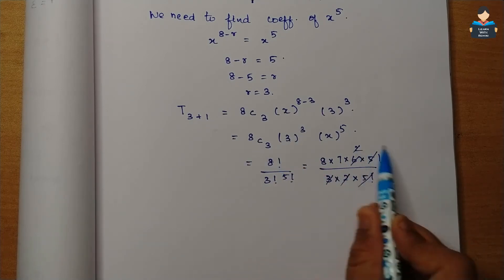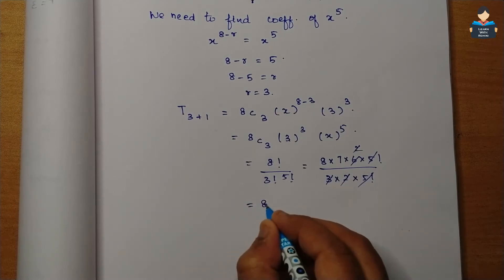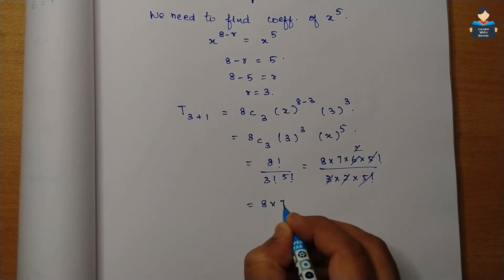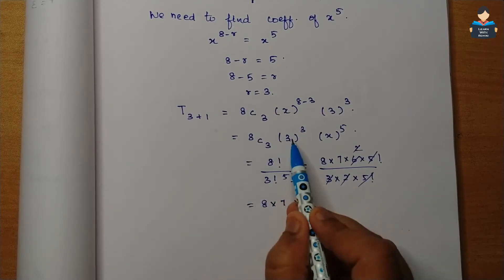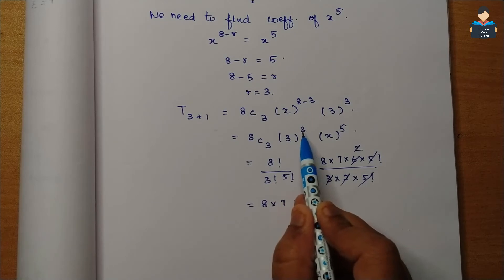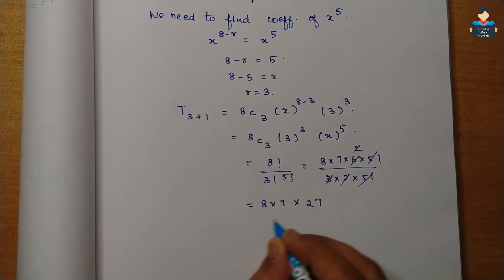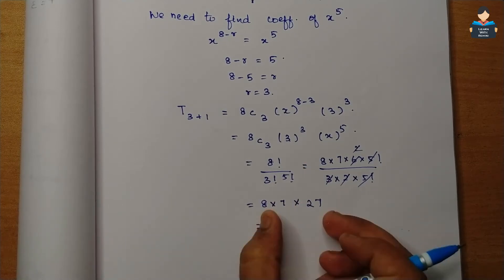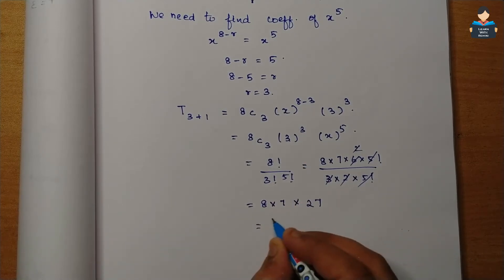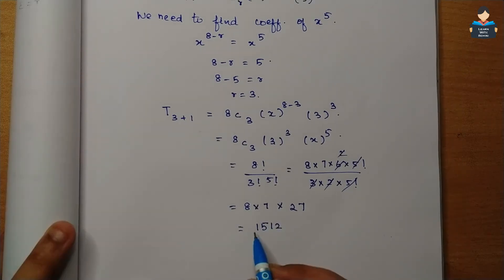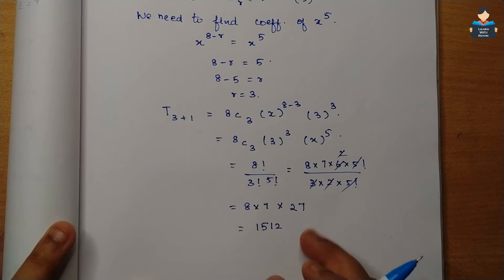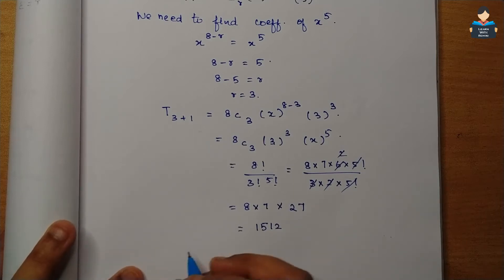So 8C3 equals 8 × 7 × 6 divided by 3 × 2 × 1, and 3 cubed equals 27. Multiplying these together gives the coefficient of x to the power 5. The final answer for the coefficient of x⁵ is 1512.